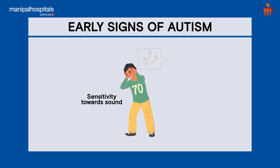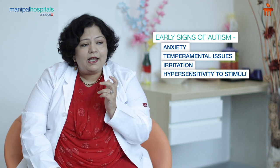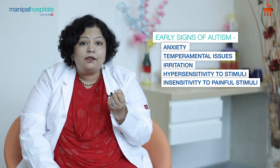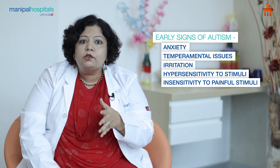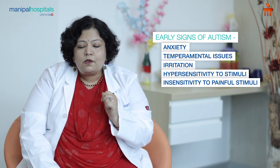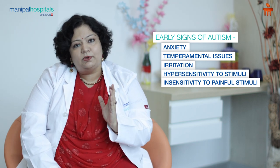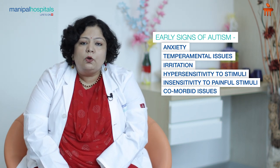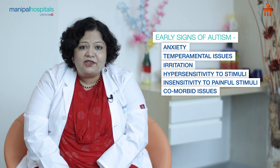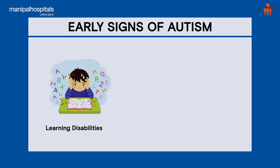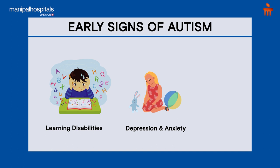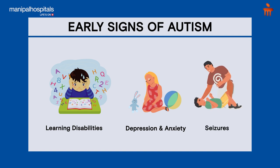There is a heightened sensitivity to certain stimuli — for sound or something they might get irritated very easily — whereas to pain we have seen cases where a ruptured appendicitis happened and the child didn't complain of pain. So there could be decreased sensitivity to some stimuli as well. Many autistic children have comorbid issues — almost 70 percent have comorbid intellectual disability, learning disability, depression, anxiety, and many may also have seizures.